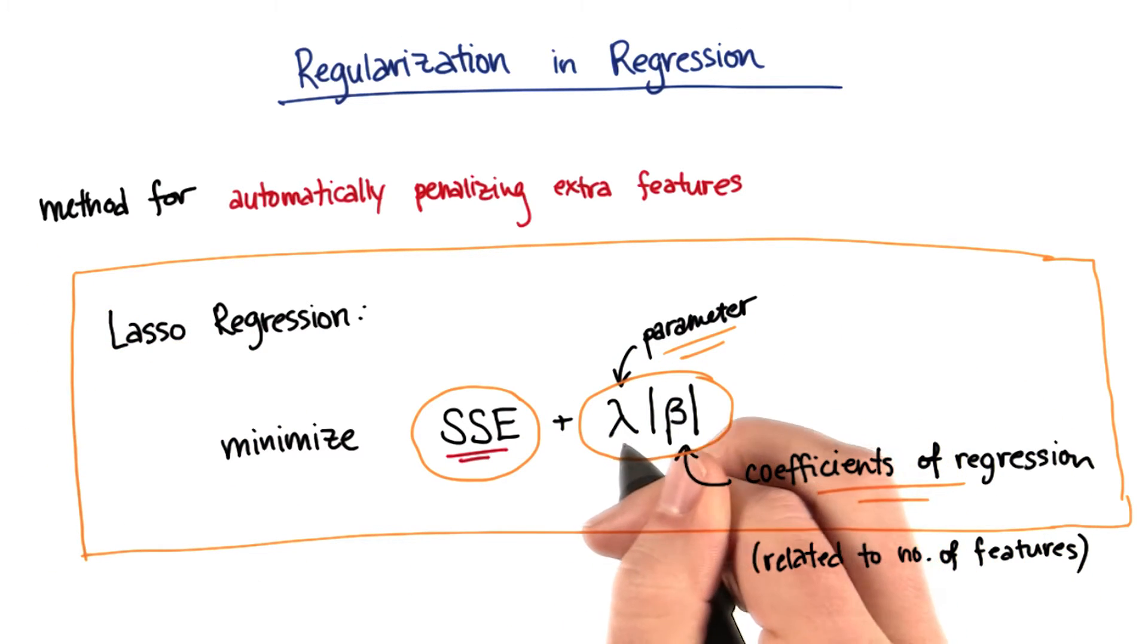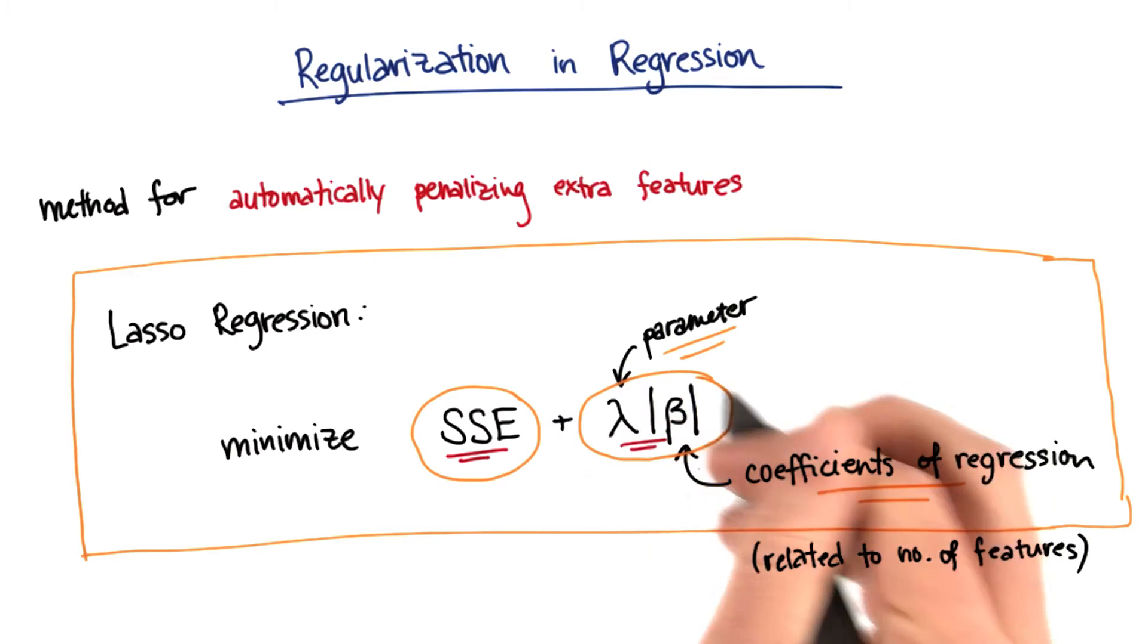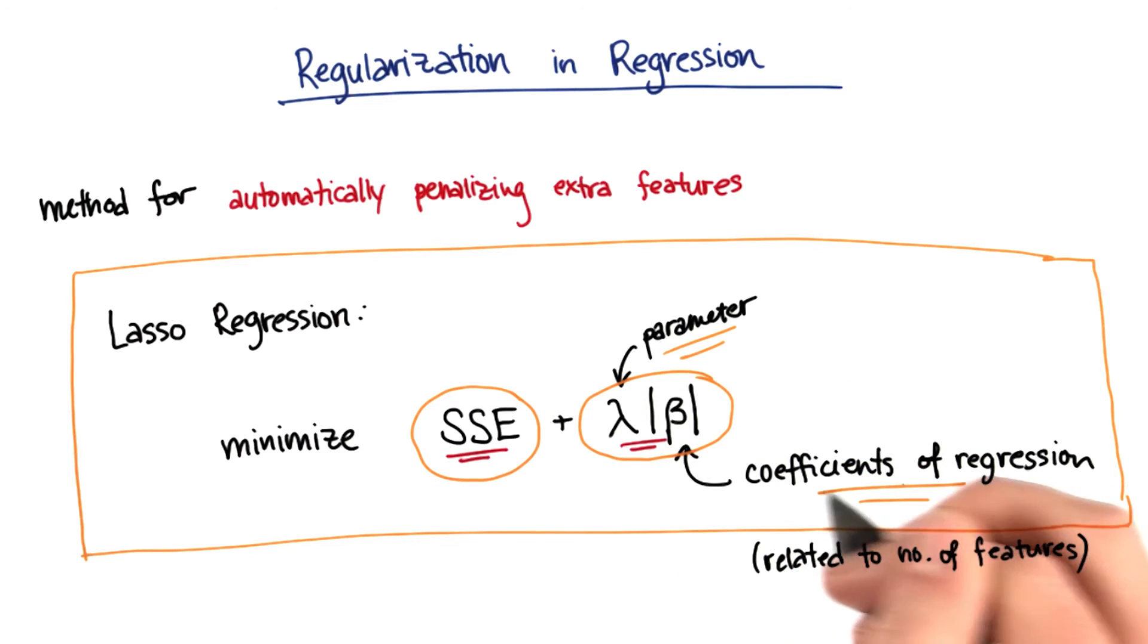But I pay a penalty for using that extra feature. That comes in the second term with the penalty parameter and the coefficient of regression that I'm going to get for that additional feature.